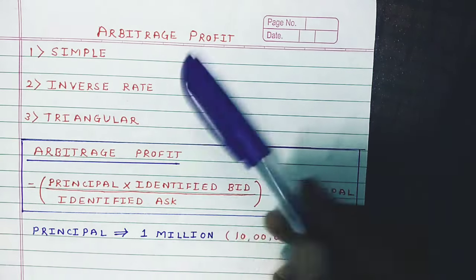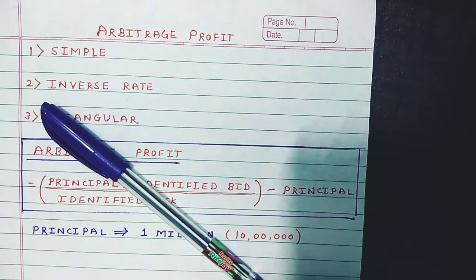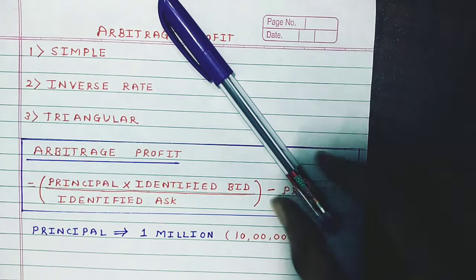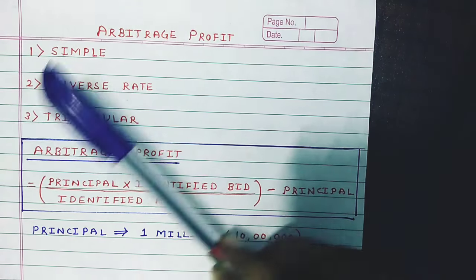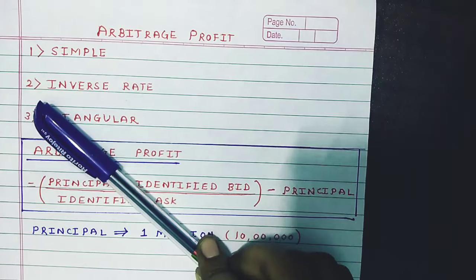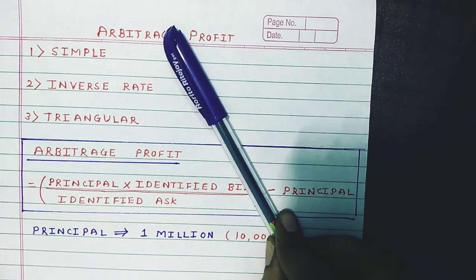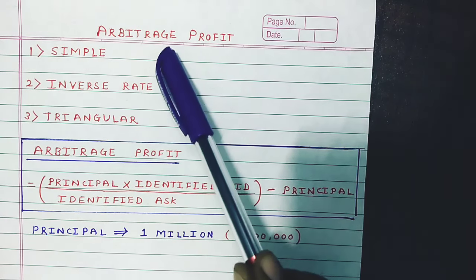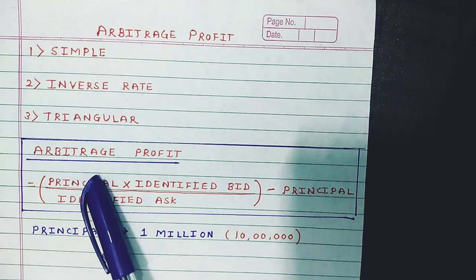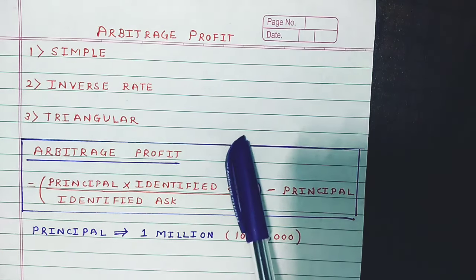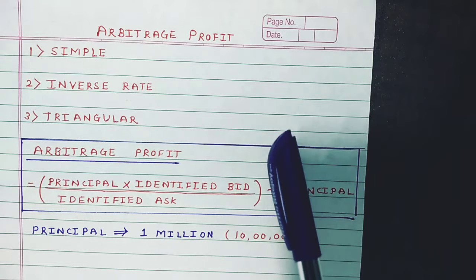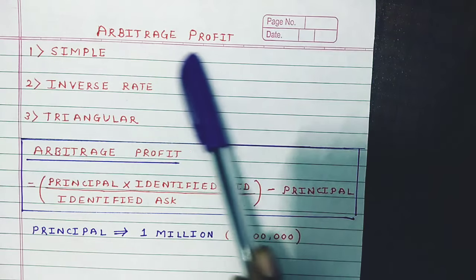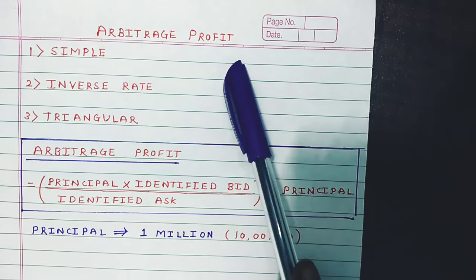In layman's language, a simple example: I am purchasing this pen from the Mumbai market for 10 rupees and I am selling this pen in the Navi Mumbai market for 12 rupees. I am purchasing for 10 rupees and selling at a higher rate, making a profit of 2 rupees. So whenever in the Forex market you are purchasing the currency from one market at the lower rate and selling the same currency in another market at a higher rate, that mechanism is called Arbitrage, and whatever profit you are making is called Arbitrage Profit.